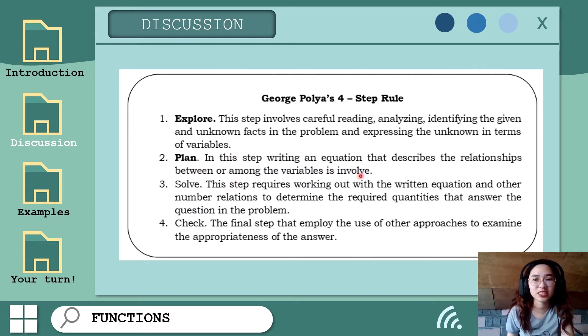Step two: Plan. In this step, write an equation that describes the relationship between or among the variables involved. So we create our equation, or in this case, our function. Number three: Solve. This step requires working out with the written equation and other number relations to determine the required quantities that answer the questions in the problem. We evaluate or perform operations depending on the problem.